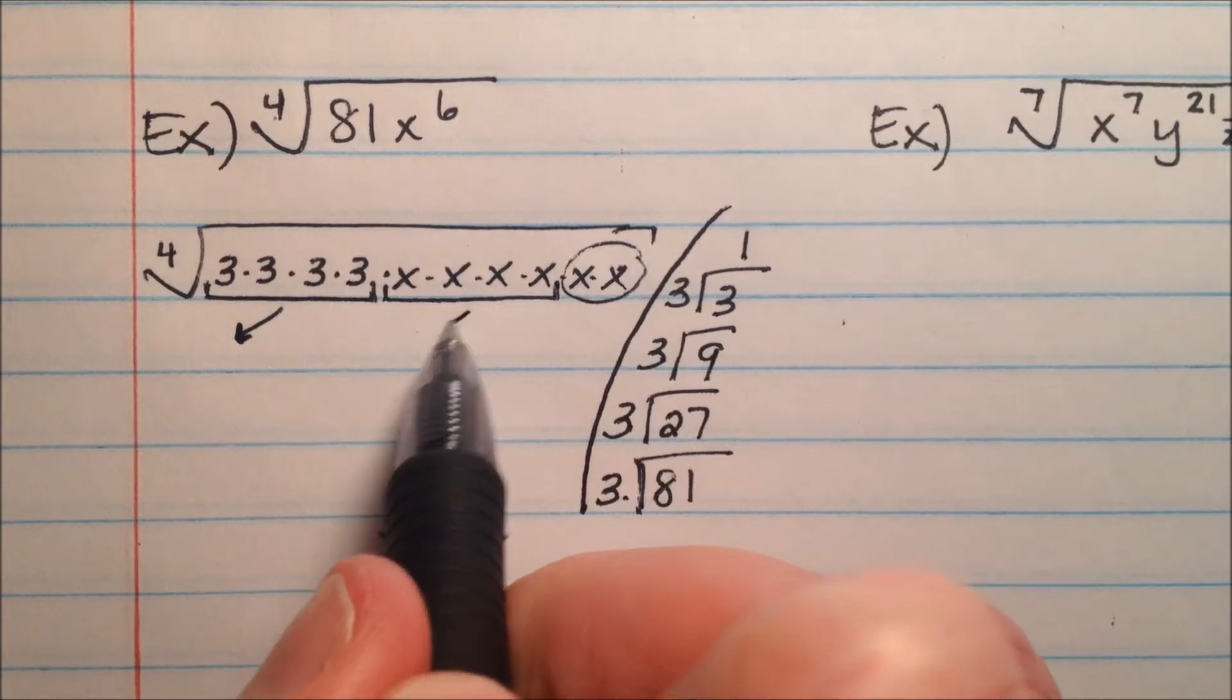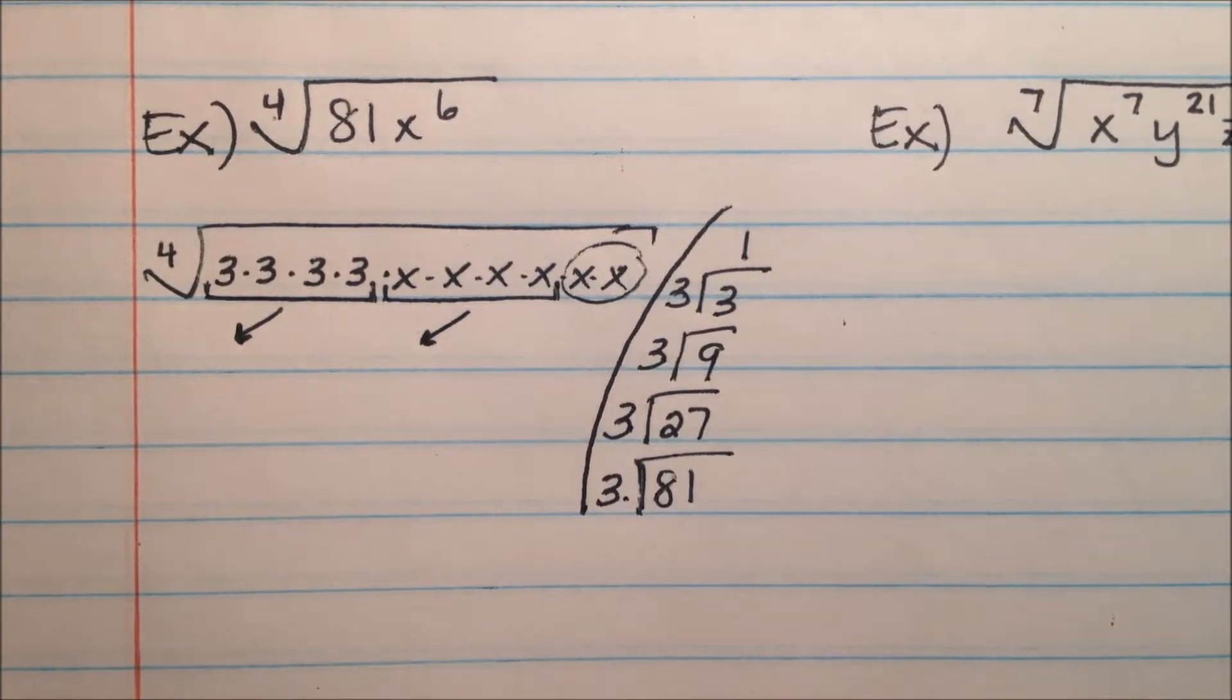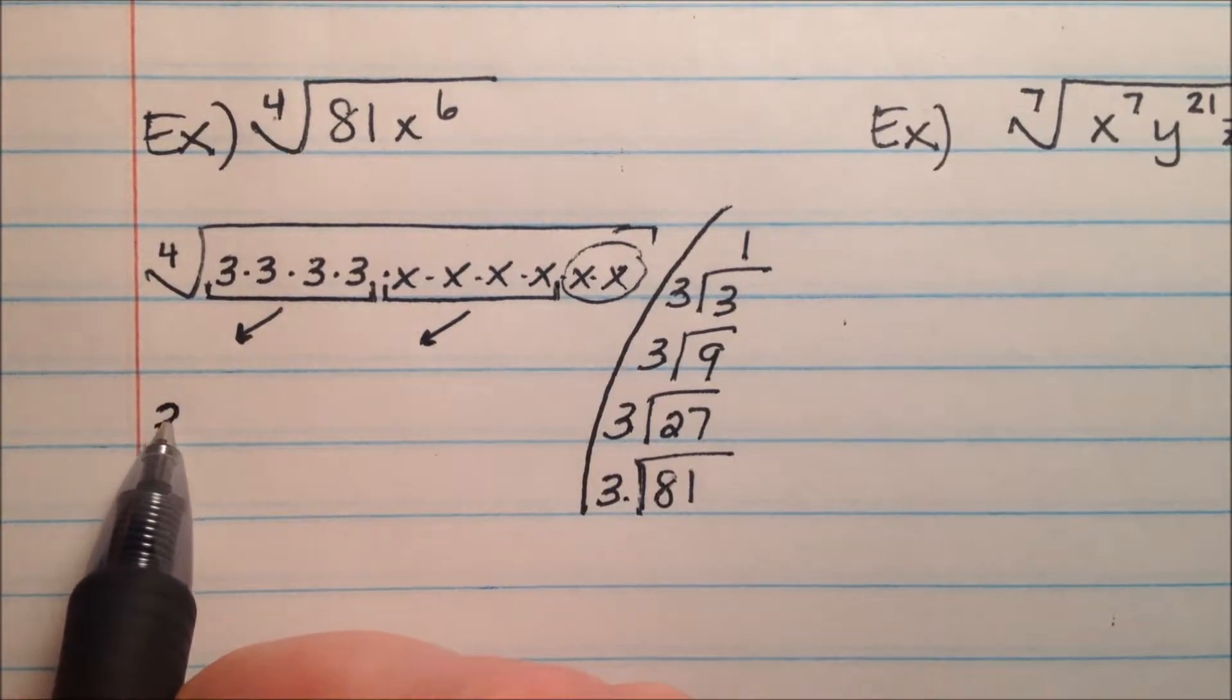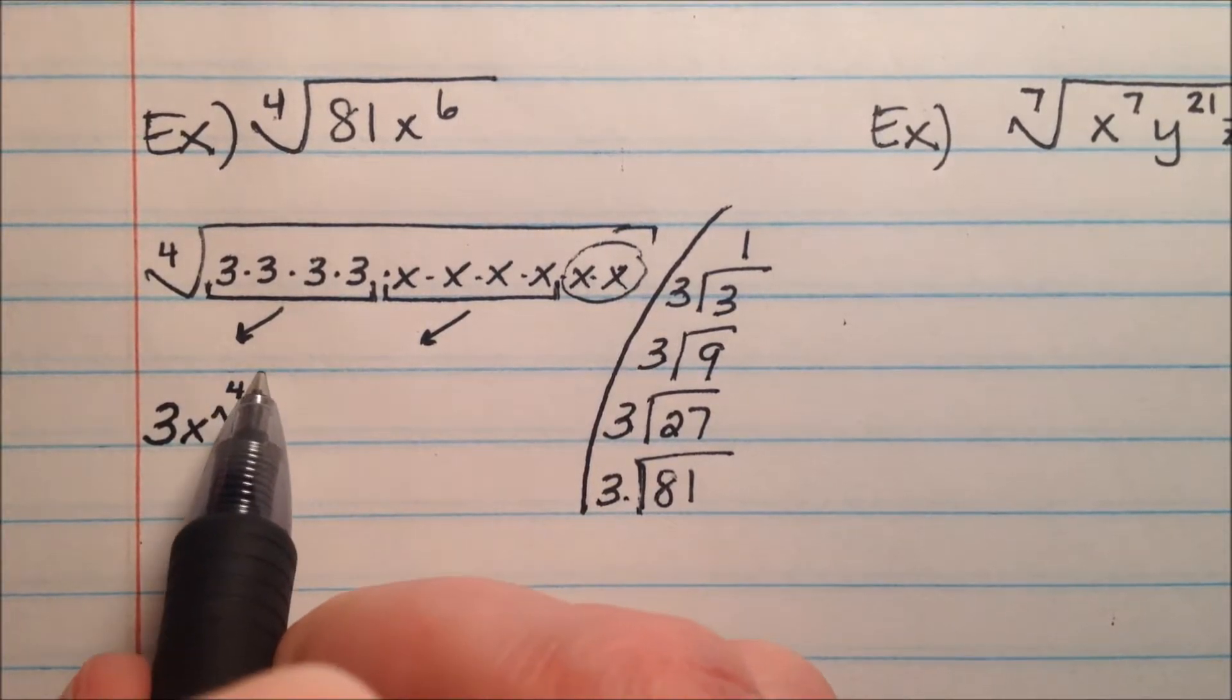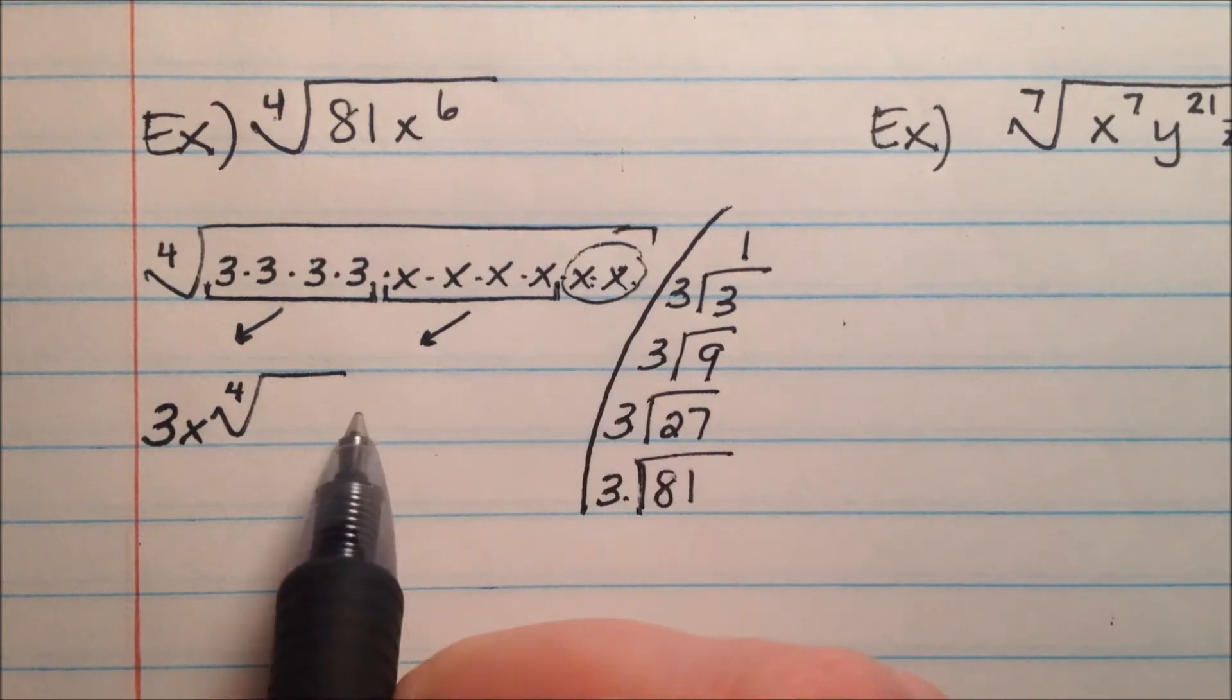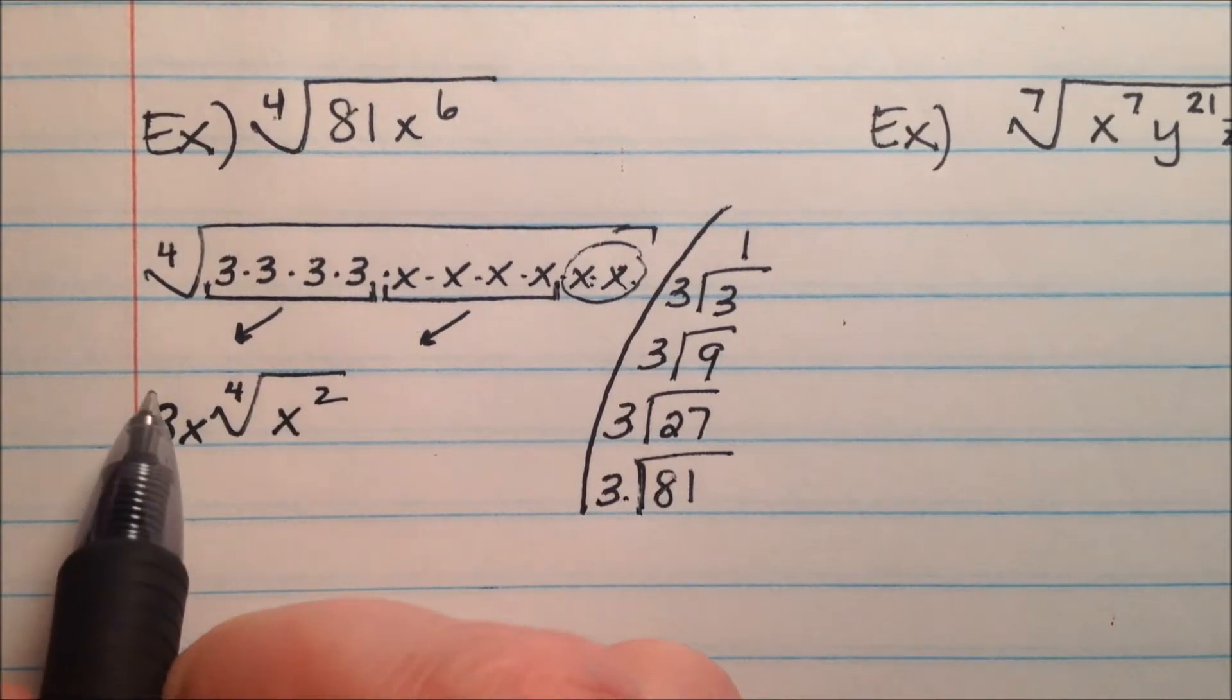So, I have this set of 3's that come out, and this set of x's that come out. So on the outside now, I have 3x, and then multiply that by the 4th root of x times x, which is x squared.